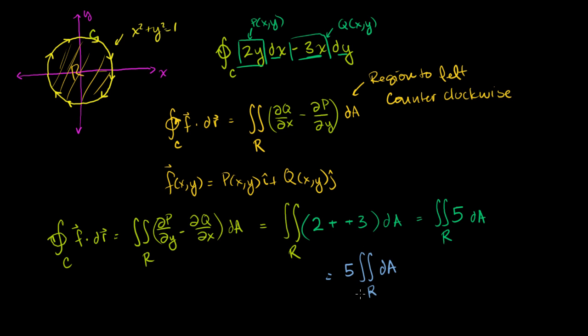So this is going to be equal to 5 times the double integral over the region r dA. Now what is this thing? It looks very abstract, but we can solve this. This is just the area of the region. That's what that double integral represents. You just sum up all the little dA's, right? That's a dA. You sum up the infinite sums of those little dA's over the region.